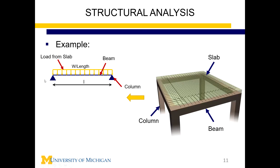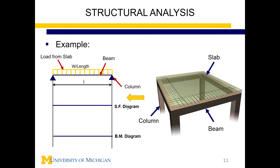With beam length L, we want to get the distribution of forces throughout the beam. Two important outputs are the shear force diagram and the bending moment diagram. The shear force diagram for this simple beam is a straight line going from WL/2 positive to WL/2 negative. The bending moment diagram is a parabola with a maximum value of WL²/8 in the middle. We will use SAP to perform all these calculations — we provide it the input and get these two outputs.